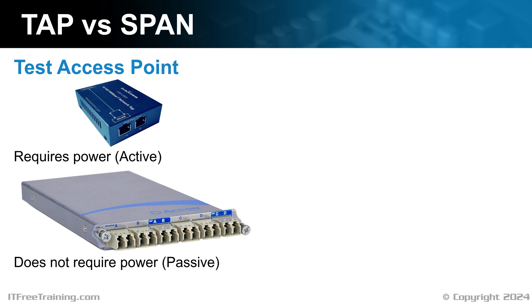For active TAPs, in the event of a power outage, most are designed to automatically switch to a pass-through mode. This means the network will not be affected. However, monitoring will not be available until the power is restored.